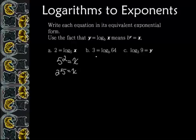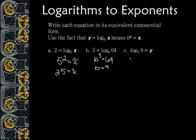The next one is the same thing: b to the third equals 64, and it turns out that b has to be 4, because 4 to the third is 64. And finally we have 3 to the y equals 9, and y has to equal 2 because 3 squared is 9.